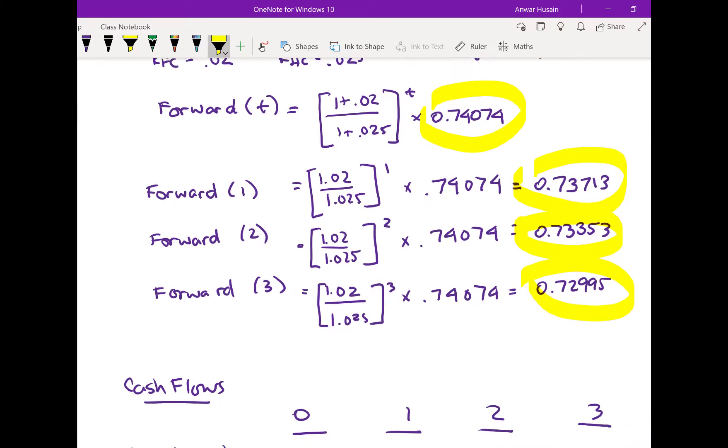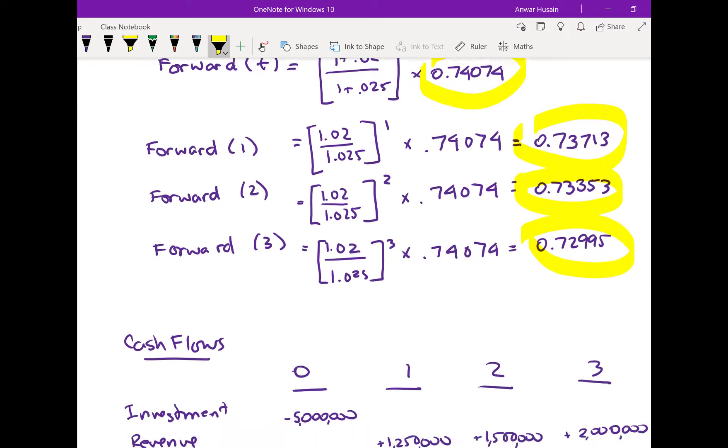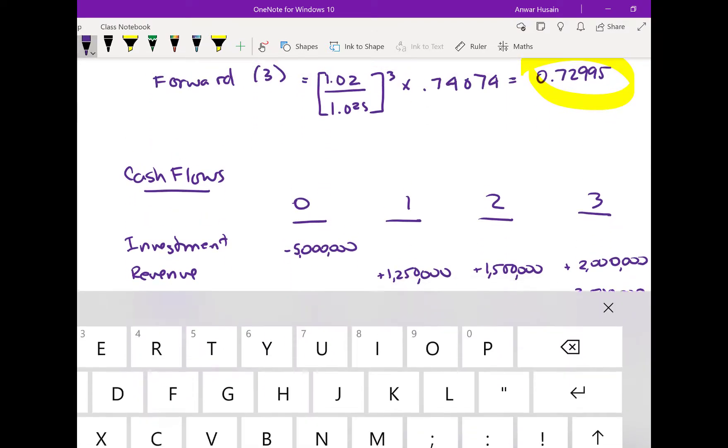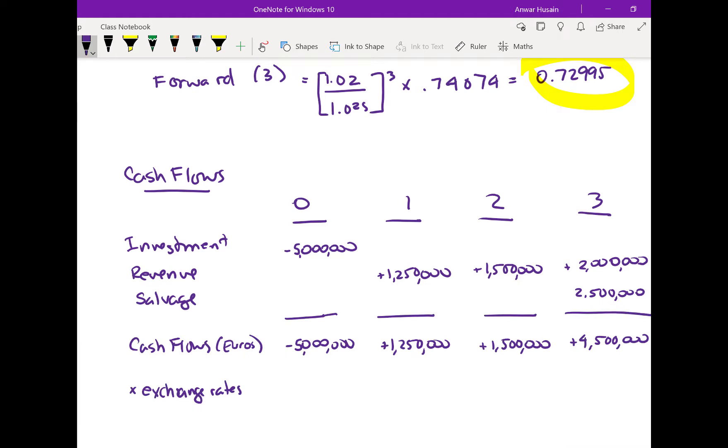Okay, so the spot rate is for today and then forwards for one, two, and three. So let's just put this in. The spot rate is 0.74074. The one year forward rate is 0.73713. The two year forward rate is 0.73353. And then the third year forward rate is 0.72995.